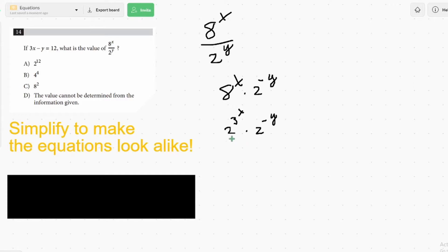2 to the negative y. And then we can combine the 2 to the 3 and to the x. We would get 2 to the 3x times 2 to the negative y. And here we're starting to see that. We've got the 3x minus y that looks like the 3x minus y over here. Then we combine these.